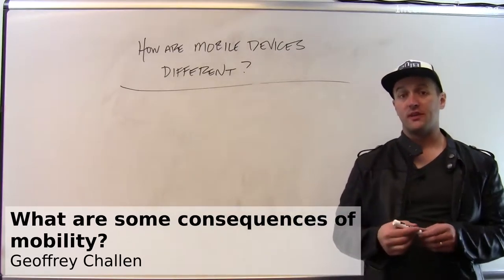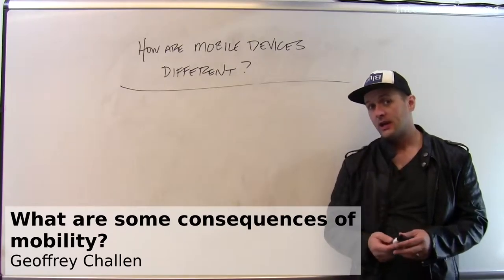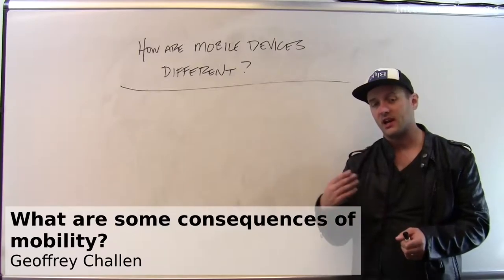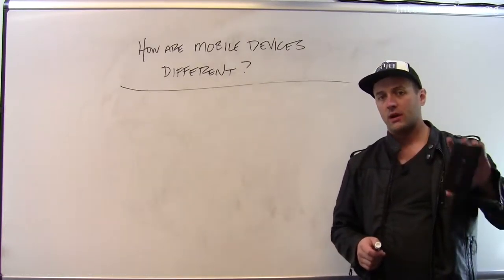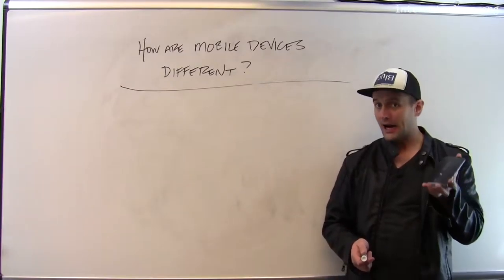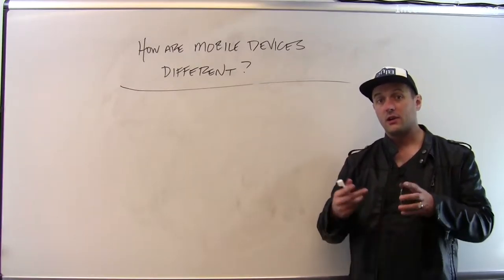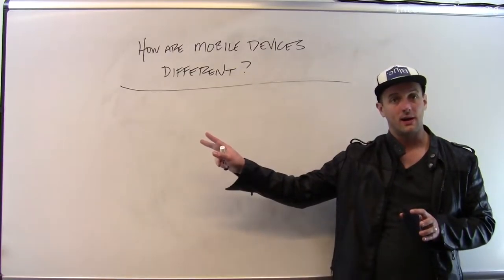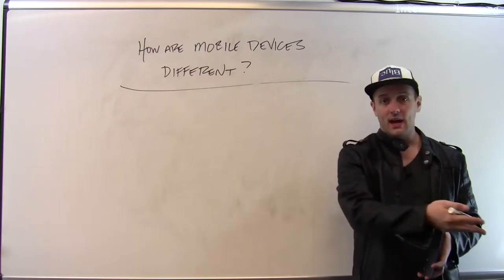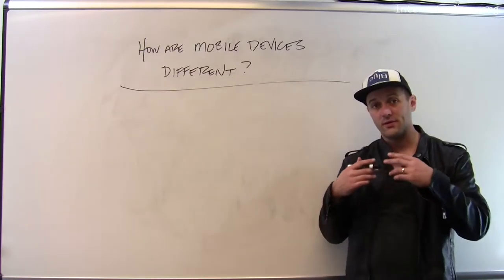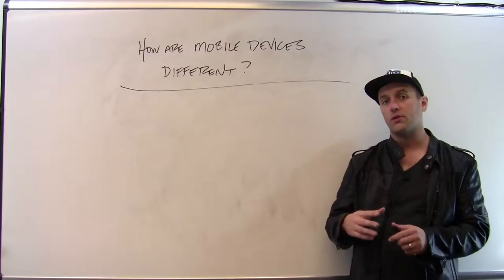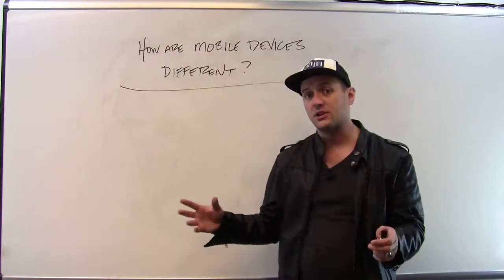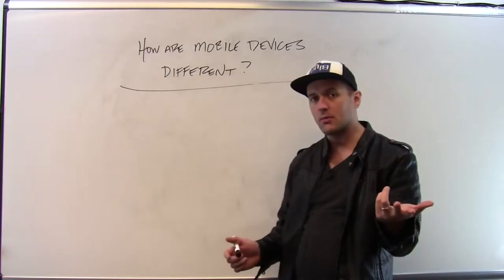To understand how mobile devices are shaping the internet, it's useful to start by thinking about how mobile devices are different than other types of computers that connect to the internet. This smartphone that I have is quite powerful, capable, and very useful, but it is different in a variety of ways from the desktop under my desk and from the laptop that I use on a daily basis. And those differences have pretty important effects on how the internet is changing, because on some level the internet is a function of the devices that connect to it.